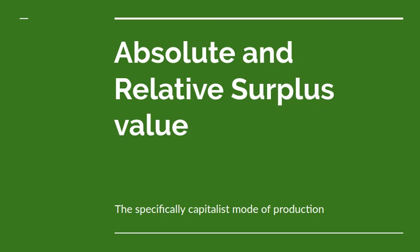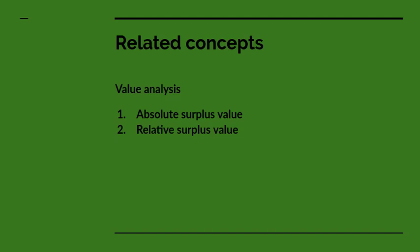Now, to those of you who have read Marx's Capital, these ideas should be fairly familiar, but I hope I can enrich them slightly by drawing on aspects of analysis which he presents in his drafts of Capital of 1861. There are going to be two columns of related ideas here. The first relates to value analysis, and in these terms the relevant concepts are absolute surplus value and relative surplus value. But there's another domain, which is the domain of technical analysis, or analysis of the technical properties of the labour process.